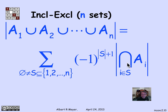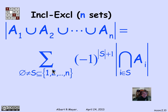The sign of each intersection term is determined by the size of S. If S has odd size, we want a positive contribution, so we use (-1)^(|S|+1), which gives an even power of -1, equaling +1. If S has even size, (-1)^(|S|+1) is an odd power, giving a negative sign. Summing over every non-empty subset S gives the generalized inclusion-exclusion formula for n sets.